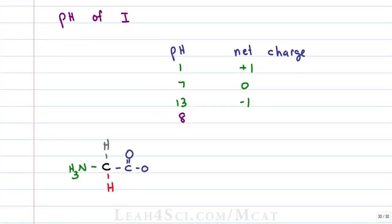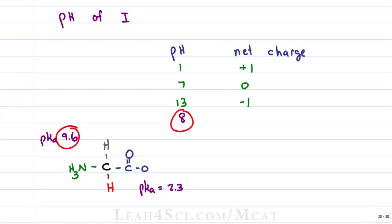Let's prove it by adding one more value and finding the charge at a pH of eight. Glycine has two pKa values: pKa for the carboxy is 2.3 and pKa for the amine group is 9.6. At pH eight, for the amine group the pKa is greater than the pH, so the pKa wins a proton for the molecule — the amine is protonated, giving a charge of plus one. For the carboxy, pH is much greater than pKa, so the carboxy is deprotonated for a charge of negative one. Adding them up: plus one minus one equals zero.